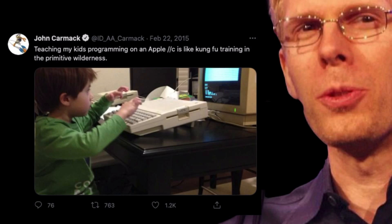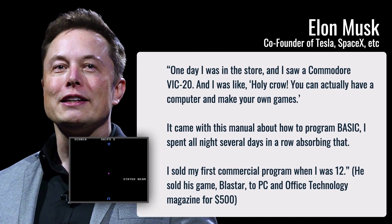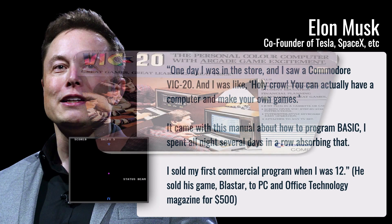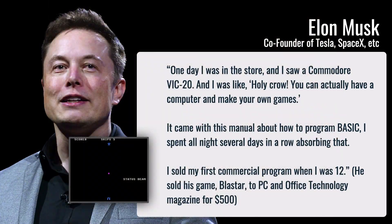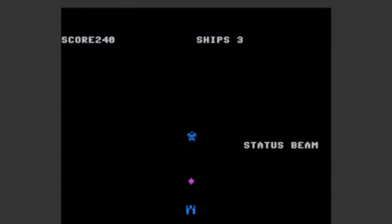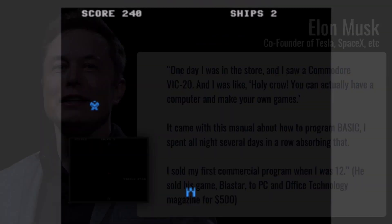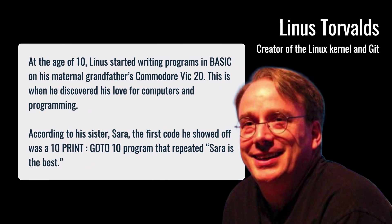John Carmack says it's like Kung Fu training in the primitive wilderness. Elon Musk of Tesla and SpaceX fame started, just like me, on a VIC-20 using the Basic manual that came with it. On his first commercial program, he sold his game Blastar for $500, and you can actually play that game right now. Linus Torvalds of Linux fame, and also the inventor of Git, started out age 10, again on a VIC-20, writing Basic programs. His sister claims his first Basic program repeated: 'Sarah is the best.'